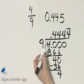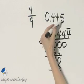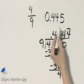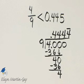So let's now compare these. The tenths are the same. The hundredths are the same. Notice this thousandths place is greater than this one, which means this decimal is greater than the fraction 4 ninths. So I have 4 ninths is less than 445 thousandths.